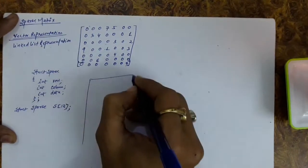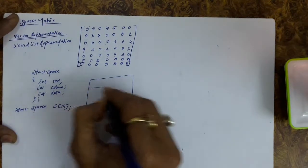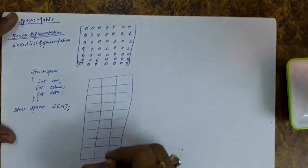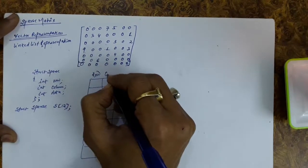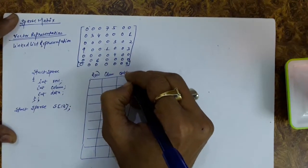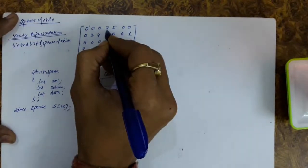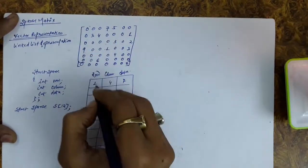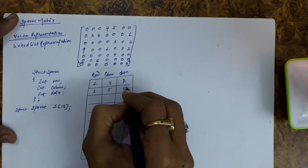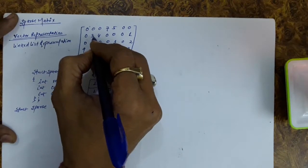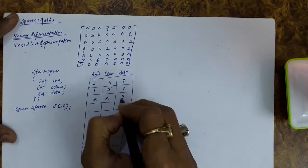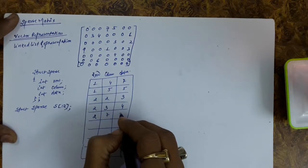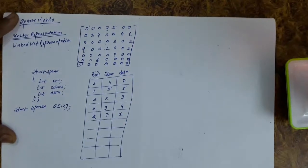So if we try to store these elements, what will be the storage? We store the row number, the column number, and the data. For the first element, the row number is 1, column number is 4, and data is 7. For the next element, row number is 1, column number is 5, and data is 5. For this one, row number is 2, column number is 2, data is 3. Row number 2, column number 3, data is 4. Row number 2, column number 7, data is 1, and so on — we can store all elements.